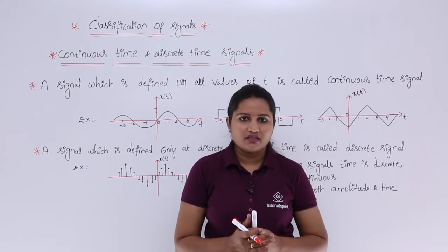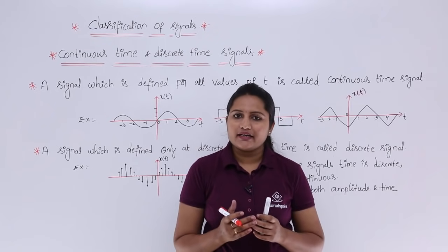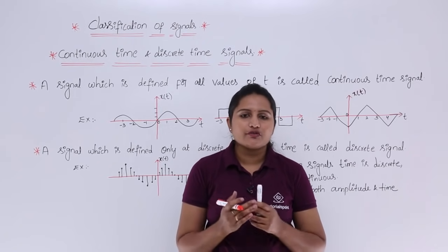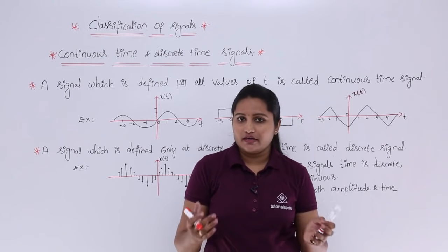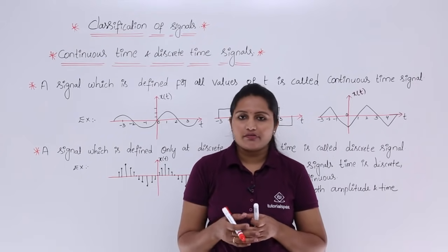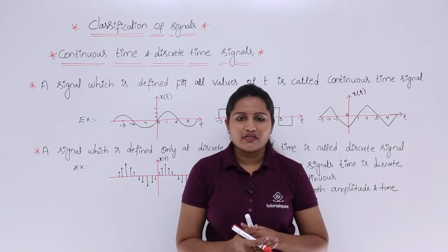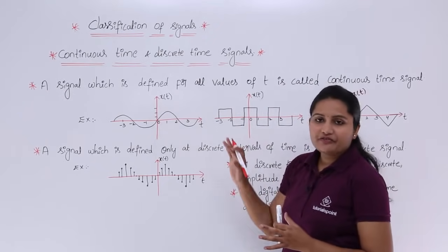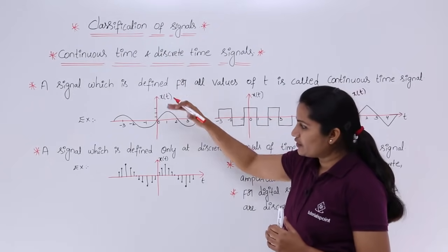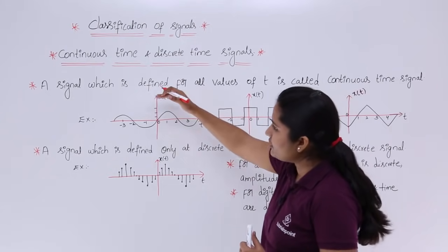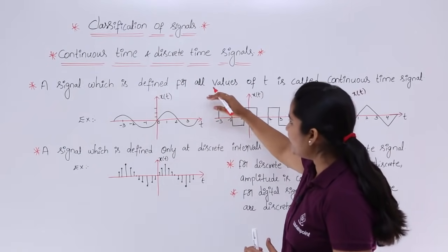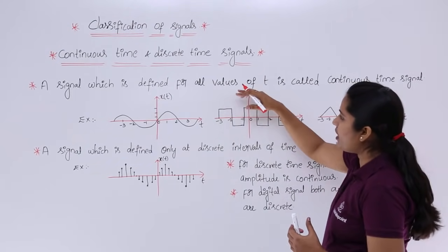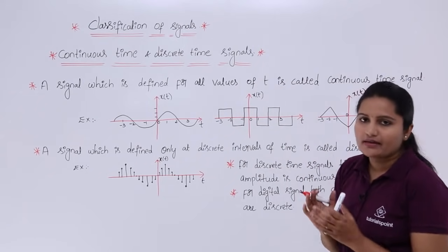A continuous time signal can be defined at any interval of time. For a discrete time signal, we cannot determine the amplitude at continuous intervals of time — only at discrete intervals of time can we define the signal. A signal which is defined for all values of t (where t is considered as time) is called a continuous time signal.